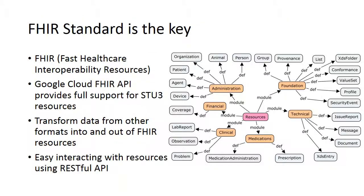Let's have more details on the FHIR standards. FHIR means Fast Healthcare Interoperability Resources, and the key here is the interoperability. That means with this standard format, we can perform a lot of operations from different devices and by different people. The Google Cloud FHIR API has provided support for STU3 resources, the latest standard. The cloud API can also transform data from other formats into and out of FHIR resources.